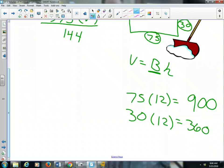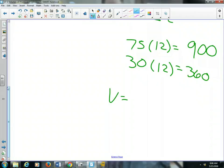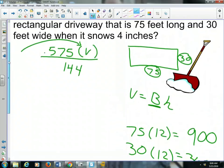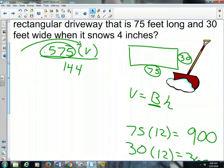Okay, now that we know that, we can find the volume. The volume equals the area of the base, which is 900 times 360, multiplied by the height. It snows 4 inches. Alright, if we multiply all three of those together, we get 1,296,000 cubic inches of snow on my driveway when it snows 4 inches. What a day, right? So now we're going to multiply that by 0.575 and divide it by 144.